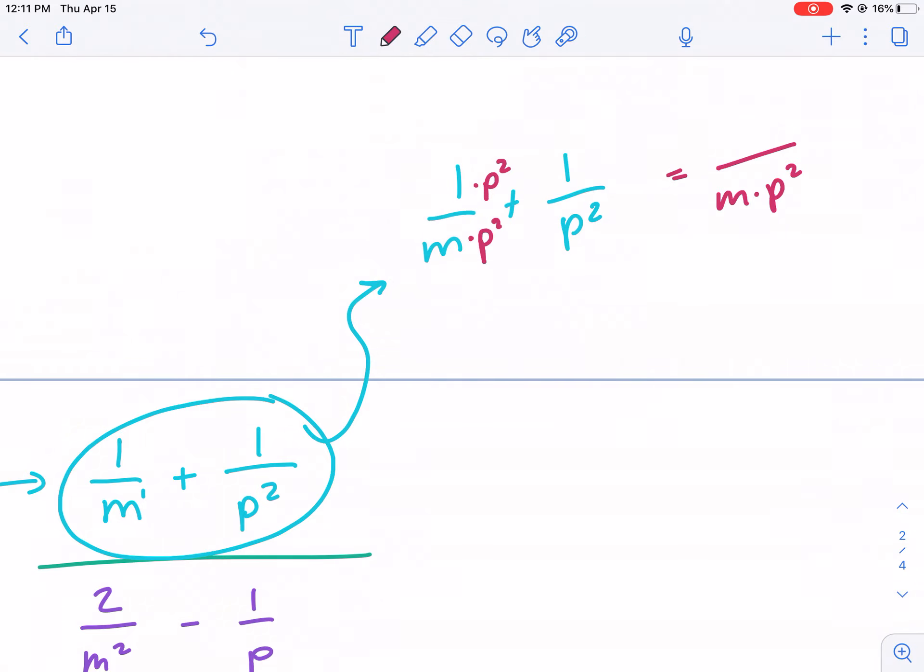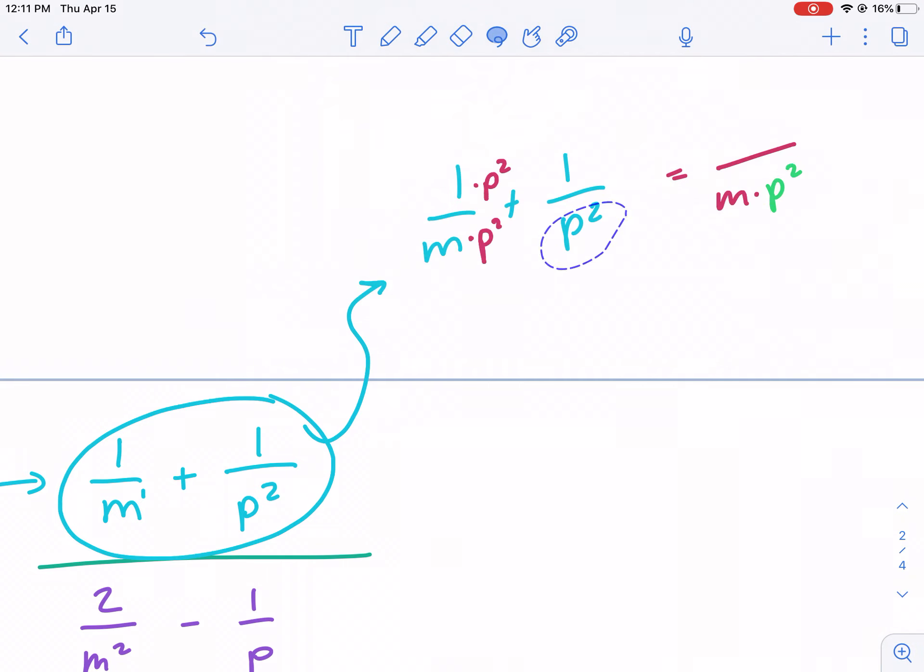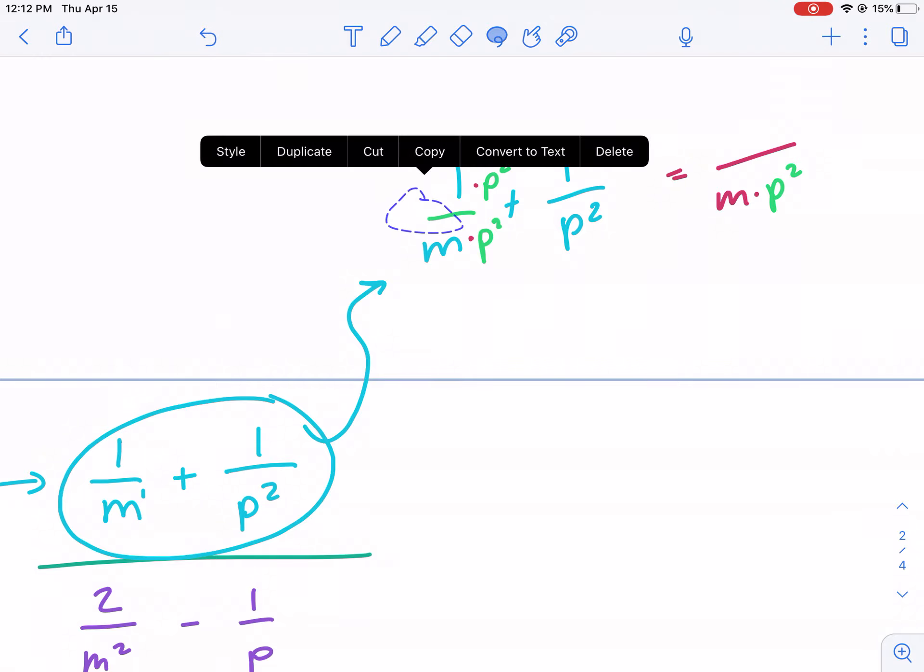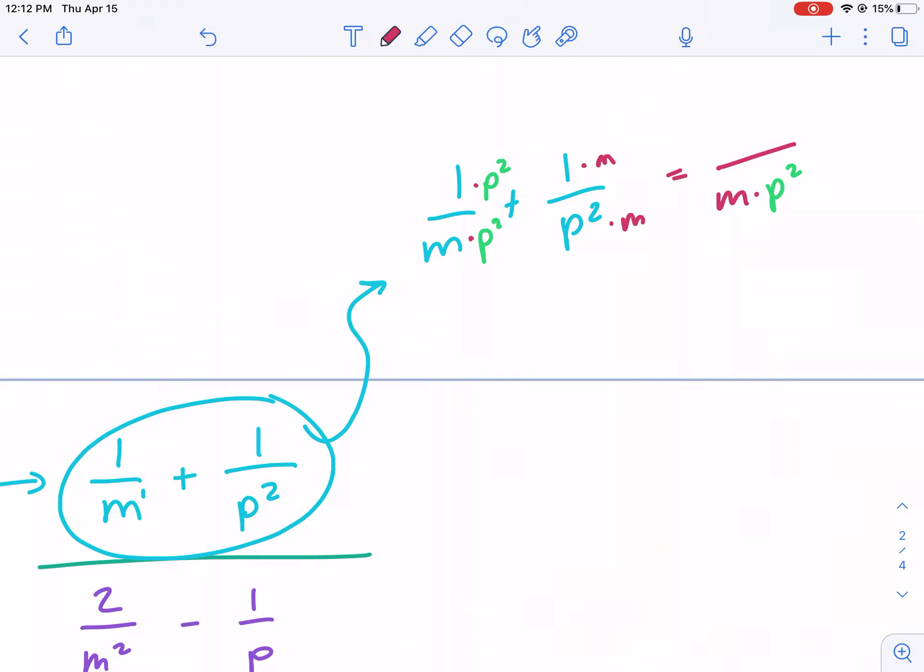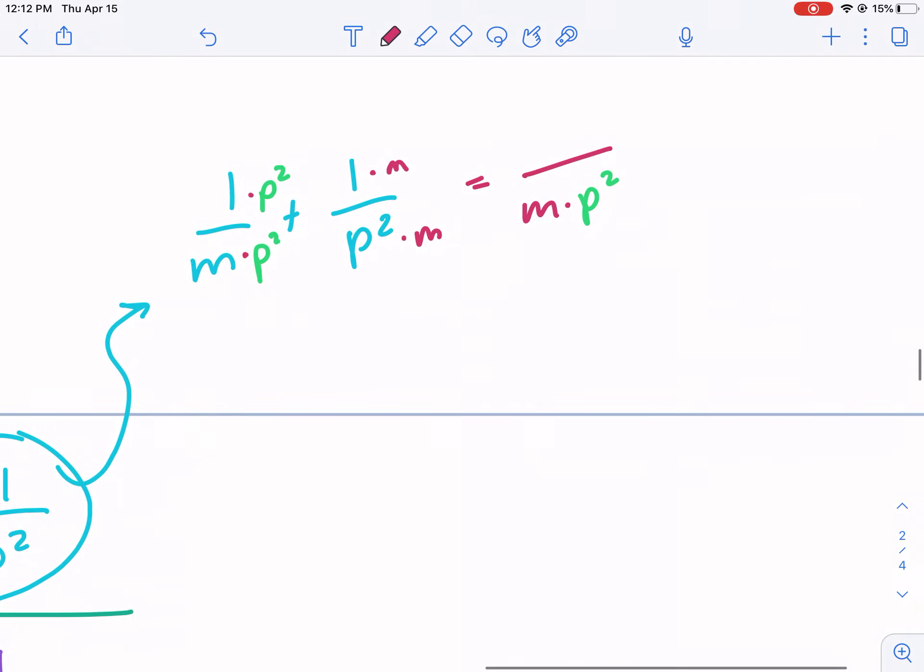The second fraction, p squared, is missing the m in the denominator. So I'm going to multiply both the top and bottom by m. Now, what do I get? Well, in the first fraction, I'm going to get this as p squared over m p squared, plus I get one times m is m over m p squared again.